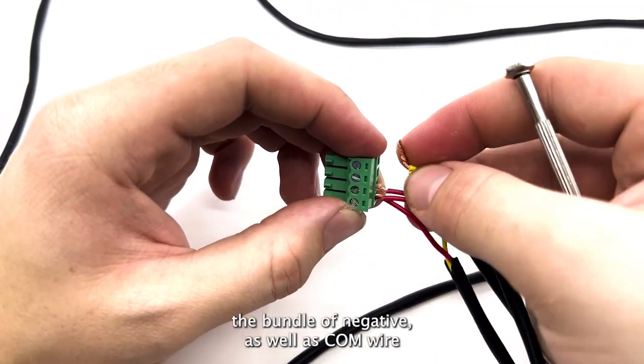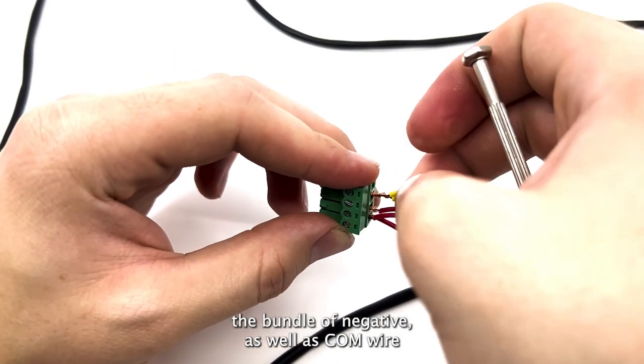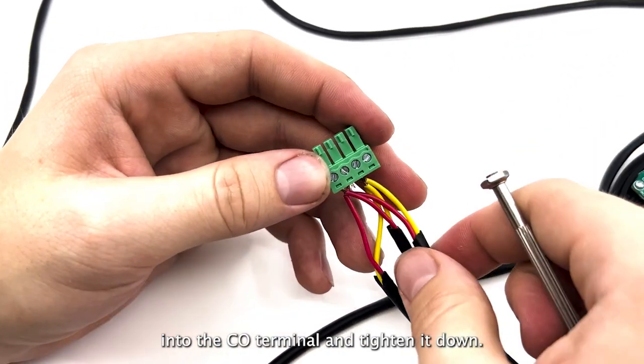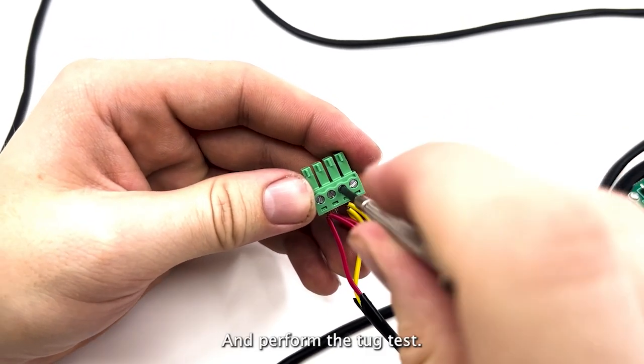Lastly, insert the bundle of negative as well as COM wire into the CO terminal and tighten it down to perform the tug test.